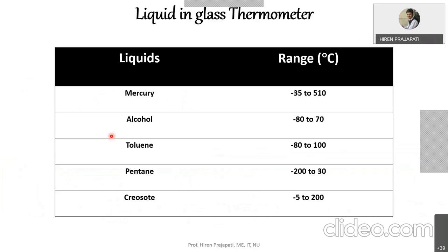We also have other liquids that can be filled in thermometers. Alcohol can measure down to -80°C, which is a more negative range than mercury. Pentane can measure temperatures from -200°C to 30°C. Based on the application of the thermometer, you have to choose the liquid used as the medium.